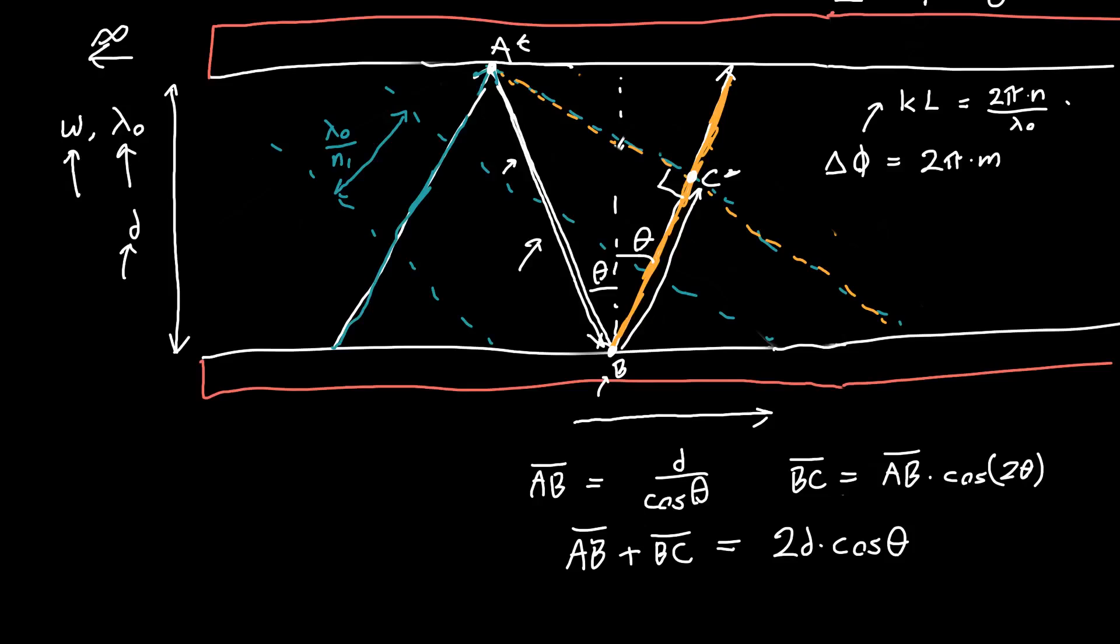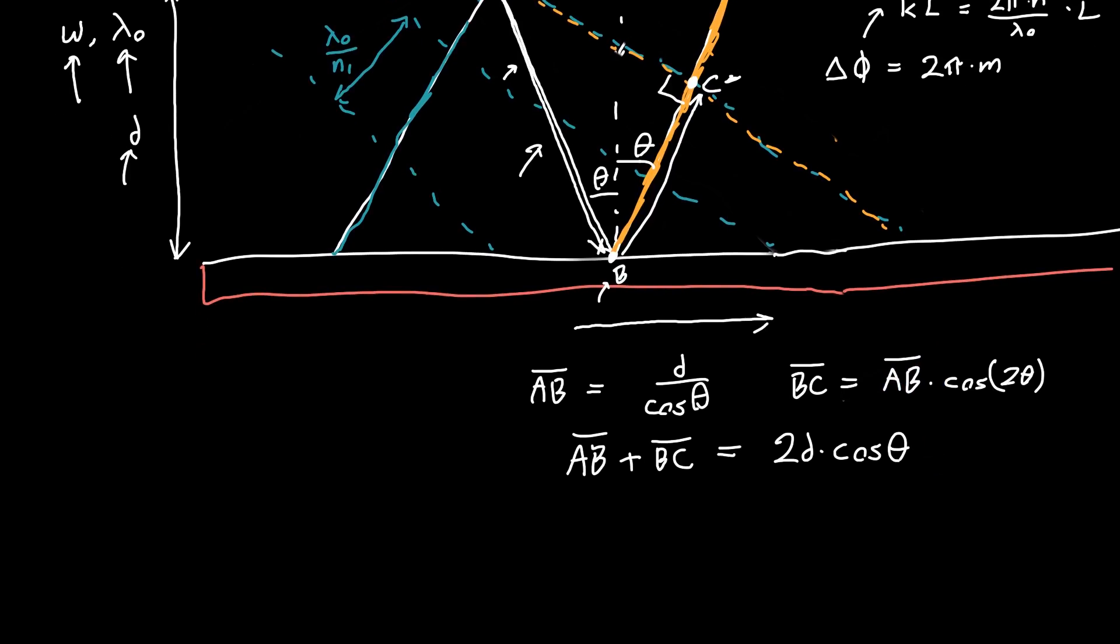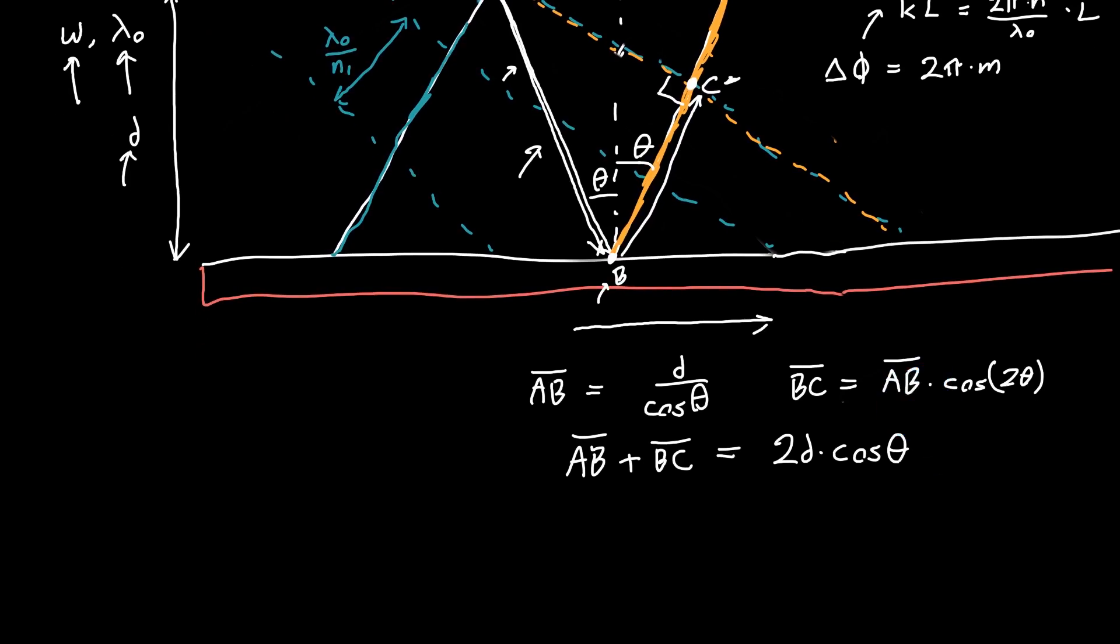It looks like I was missing a multiply by L up there. We can plug this into our condition for the phase: the phase difference between these two points has to be 2π or some multiple of 2π. This is just equal to kL, or 2π times n1—the refractive index inside here—times 2d cosine theta divided by lambda naught. So the 2π's cancel.